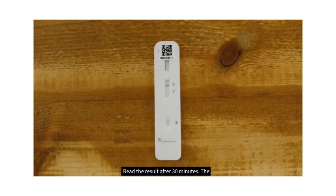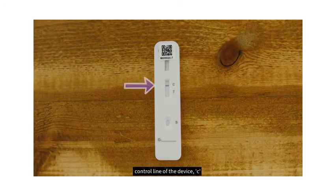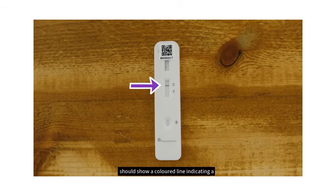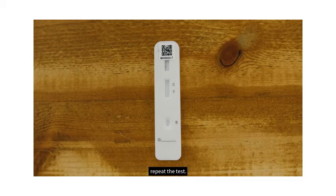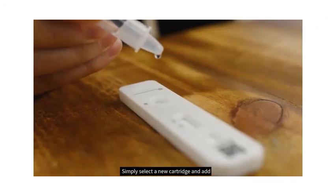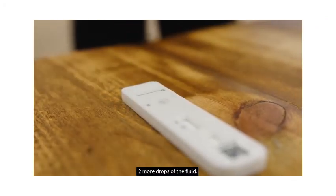Read the result after 30 minutes. The control line of the device, C, should show a colored line indicating a valid test. If after 30 minutes the control line is blank, the test has failed and you will need to repeat the test. Simply select a new cartridge and add more drops of the fluid.